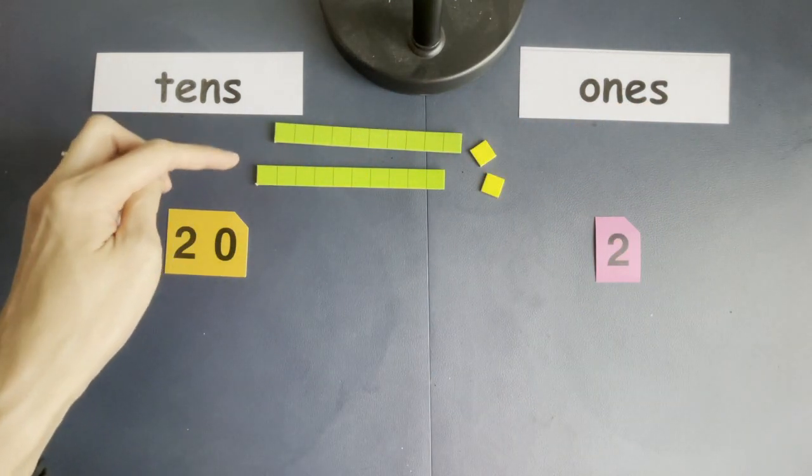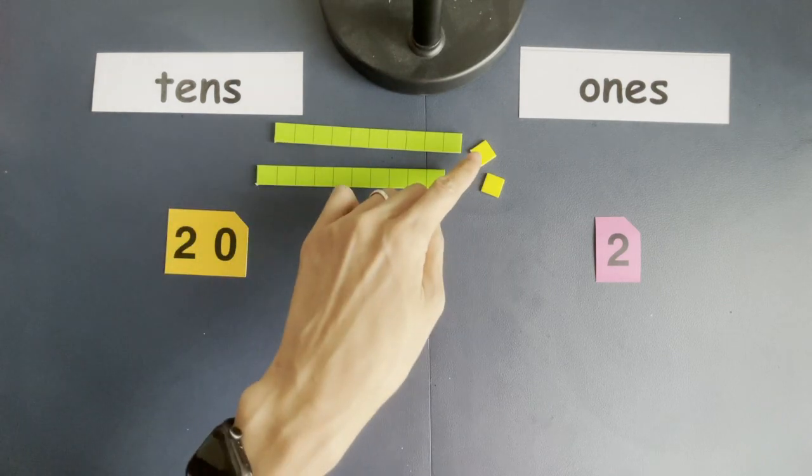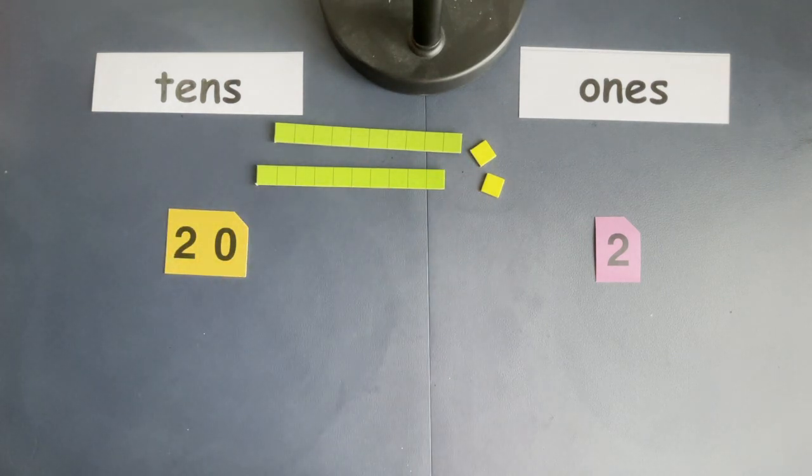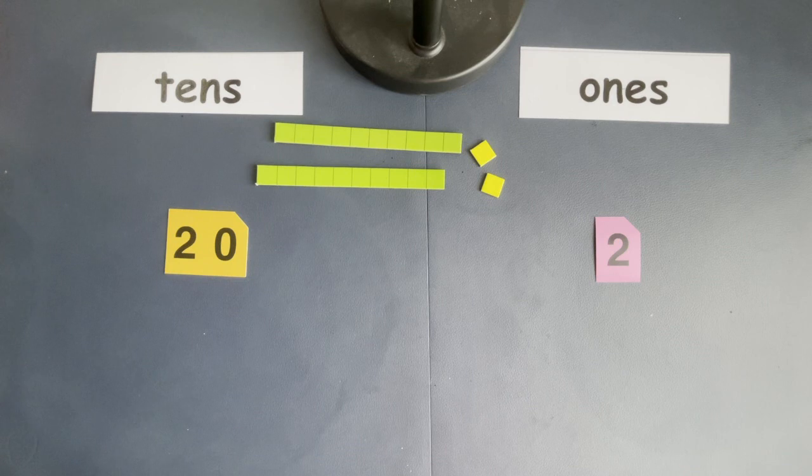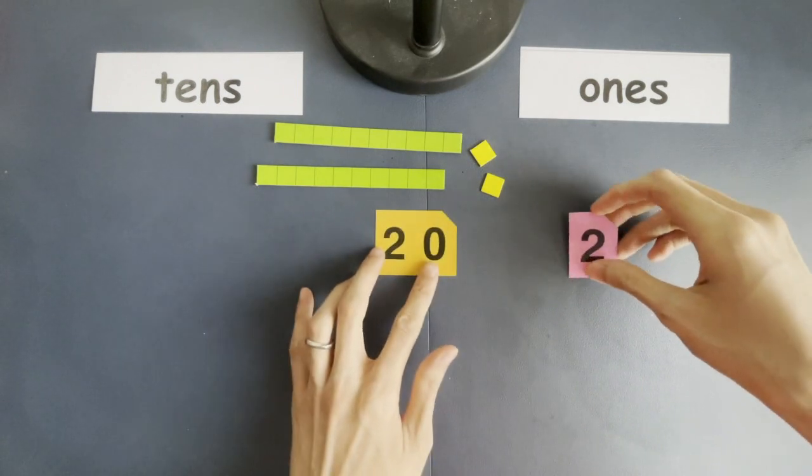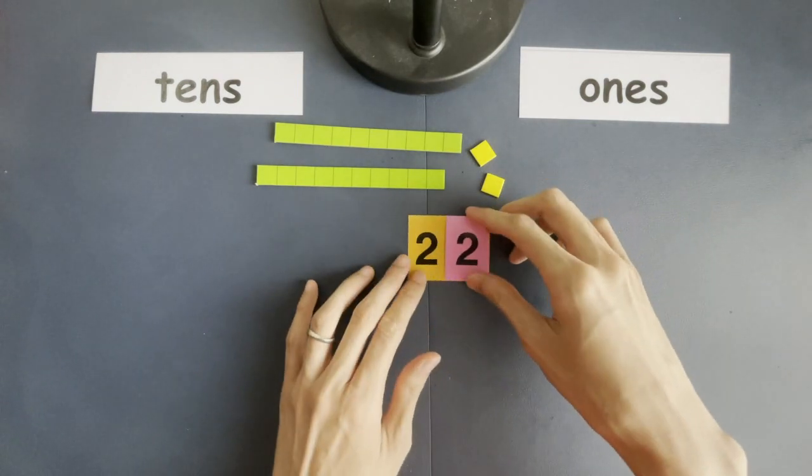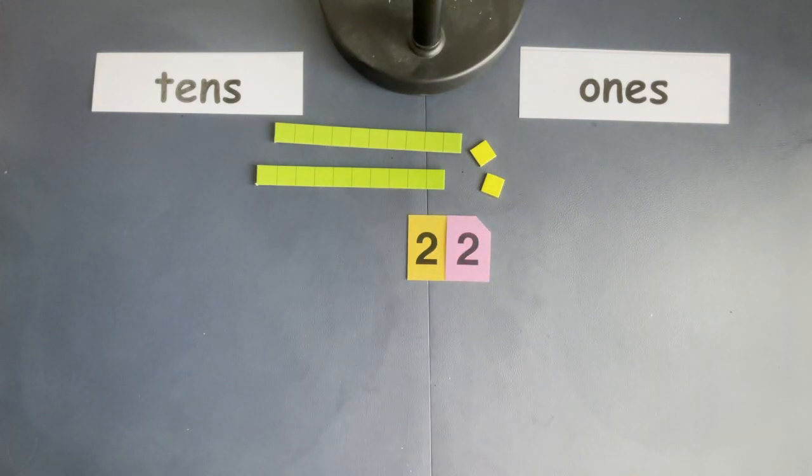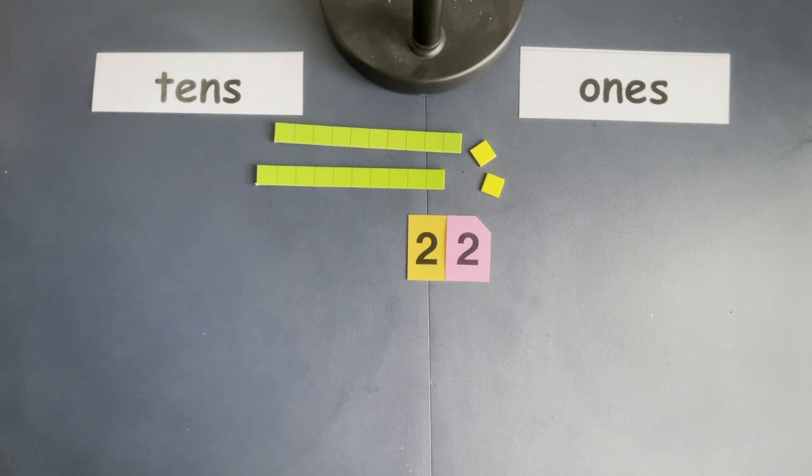Now we're going to put them together and see what number this makes. It's a new number, but what is it? Ten, twenty, twenty-one, twenty-two. Right? The new number is twenty-two. And there's actually a shortcut. So when I put these two together, twenty and two make twenty-two. It's the same answer. Now watch this again.